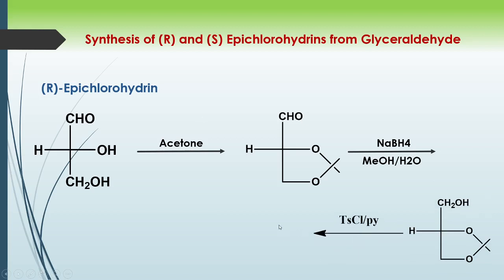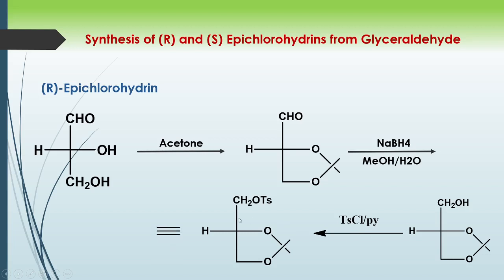In the next step there is a protection of this OH as an OTs group. When we use tosyl chloride in the presence of pyridine, the pyridine (as a base) abstracts the hydrogen, the resulting O⁻ attacks tosyl chloride, and we get the OTs product — the OH is replaced by OTs.